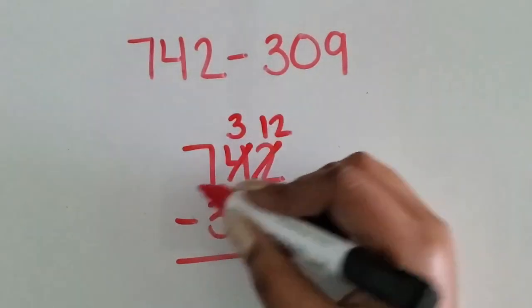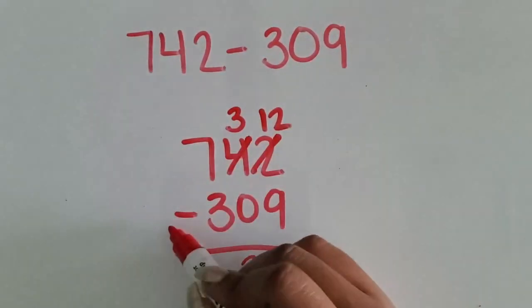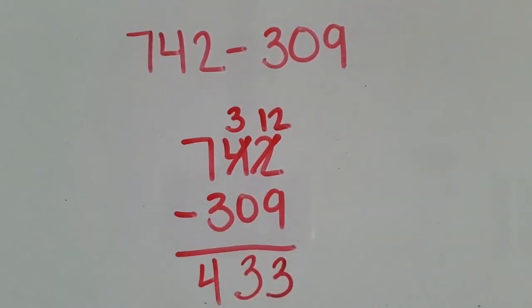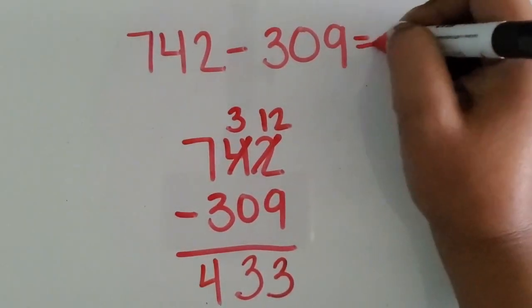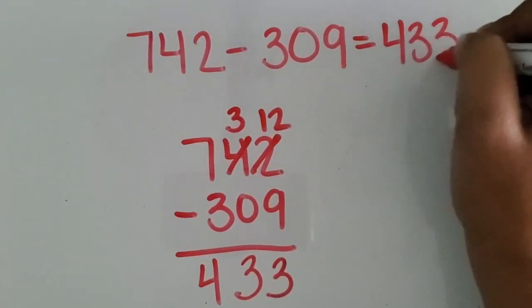Three tens minus zero tens is three tens. Seven hundreds minus three hundreds is four hundreds. The difference between seven hundred forty-two and three hundred nine is four hundred thirty-three.